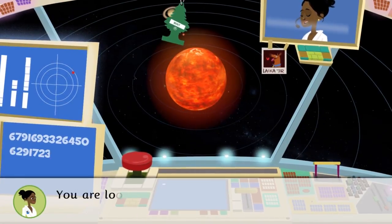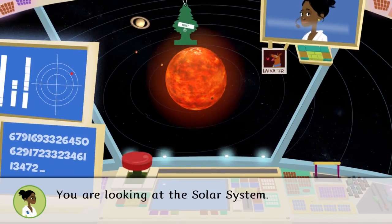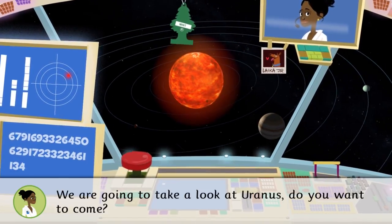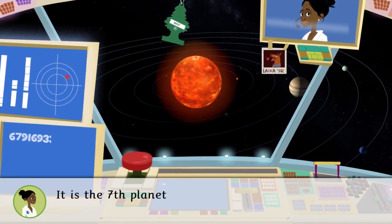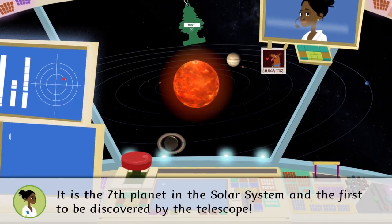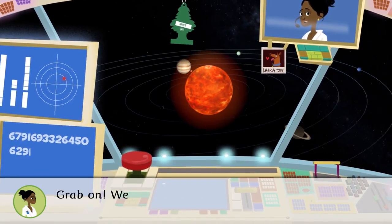You are looking at the solar system. We are going to take a look at Uranus. Do you want to come? It is the seventh planet in the solar system and the first to be discovered by the telescope. Grab on. We are headed that way.